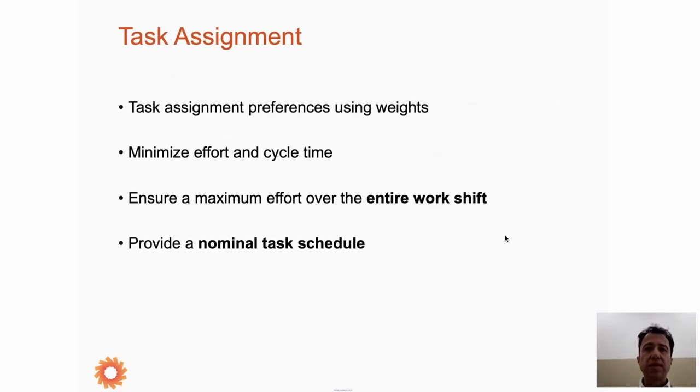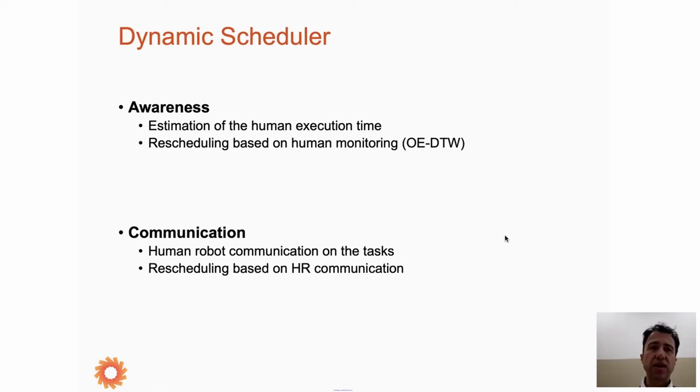We want to ensure precedence constraints are satisfied. For example, I have to place a screw before taking the screwdriver, not the other way around. These final constraints are the job quality constraints that we integrate with the help of TNO to ensure that the job the human is executing maintains a desired level of quality. The task assignment uses weights for understanding what has to be given to the human, what has to be given to the robot. It minimizes effort and cycle time, ensures maximum effort over the entire work shift, and provides a nominal schedule. The dynamic scheduler introduces awareness in the human-robot collaboration cell.